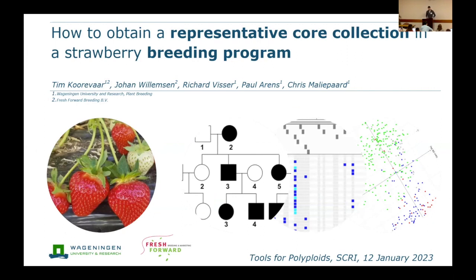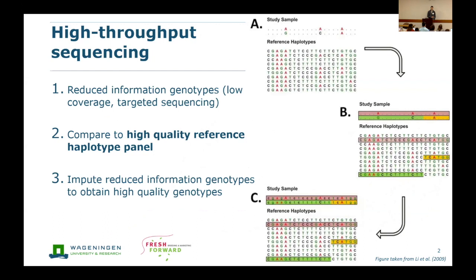Thanks for having me here. I want to tell you something about the construction of our core collection in the strawberry breeding program. I'm doing a project in collaboration with Wageningen University and Fresh Forward. The first question — for me and probably for you as well — is why do we want to develop a core collection in strawberry? Our main goal is that we want to develop a high-throughput sequencing pipeline.